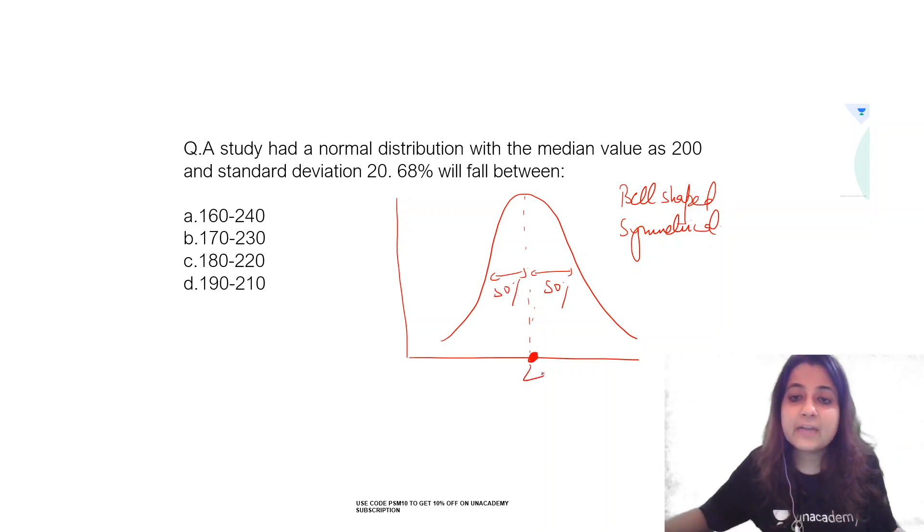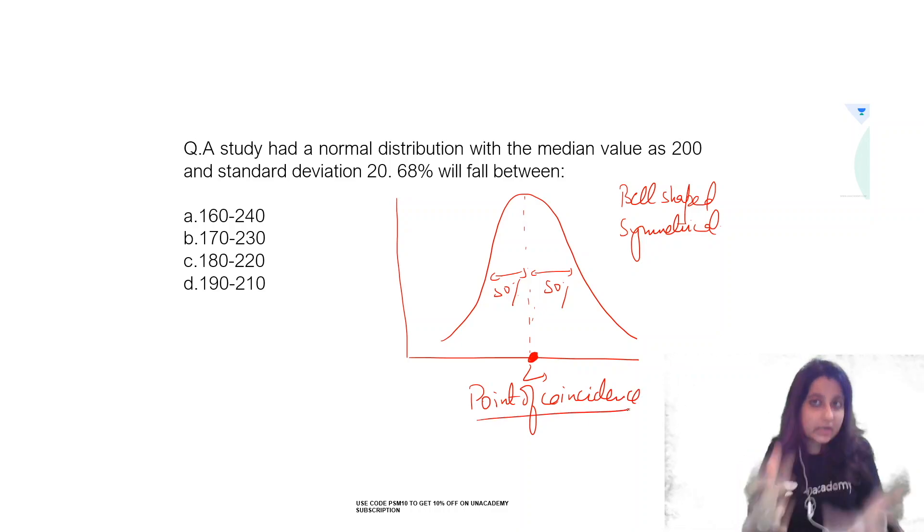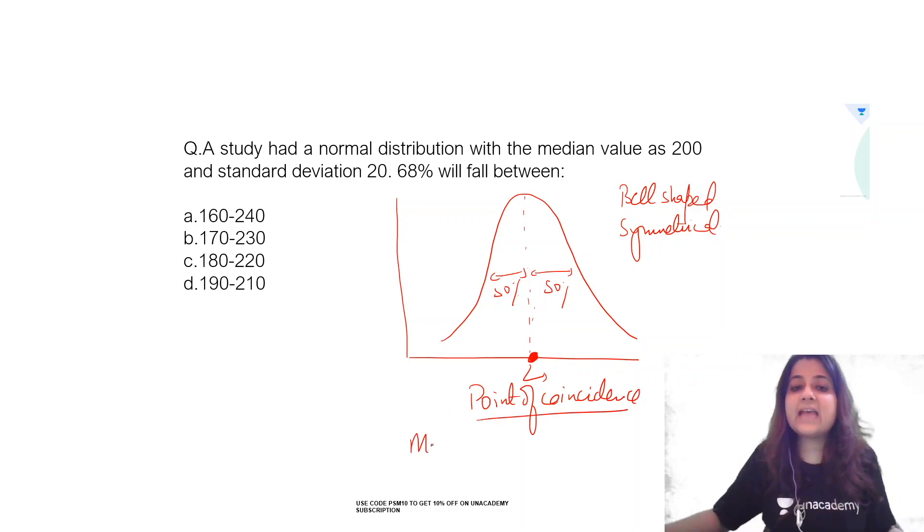Now what is this red point called? This red point is called the point of coincidence. At the point of coincidence, what is the coincidence? It's that mean is equal to median is equal to mode.